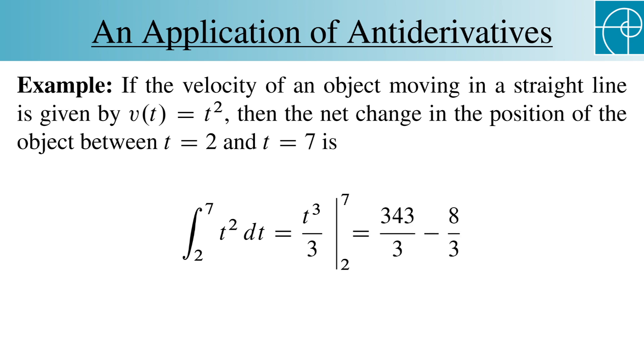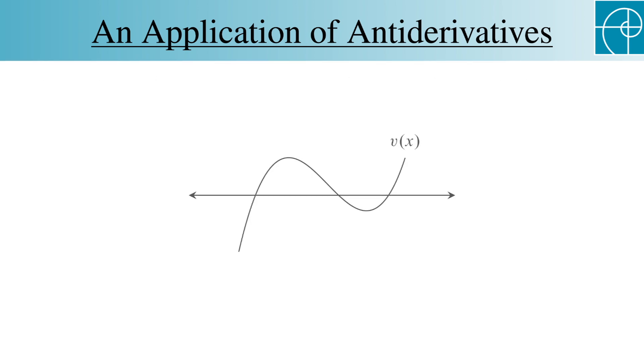And that's 343 divided by 3 minus 8 divided by 3. This interpretation helps us see why we want to consider area below the x-axis to be negative. If we look at this curve, then this area represents positive displacement or forward motion, while this area represents negative displacement or backward motion.